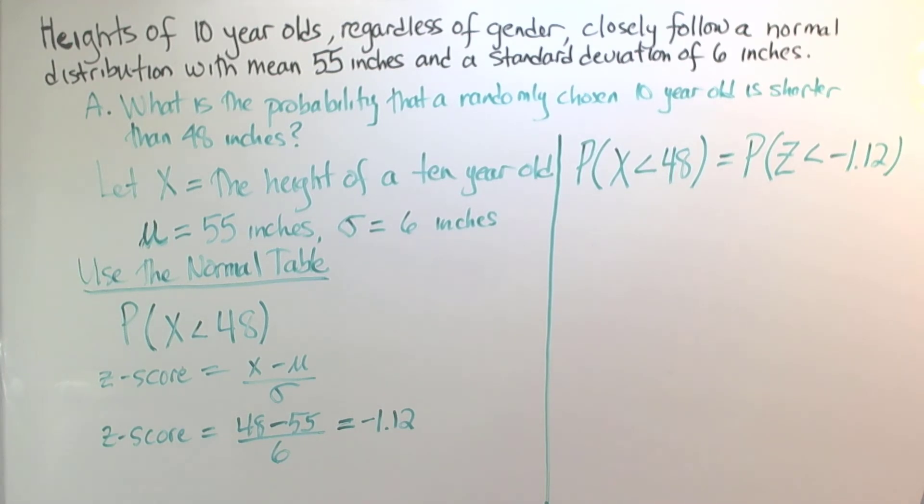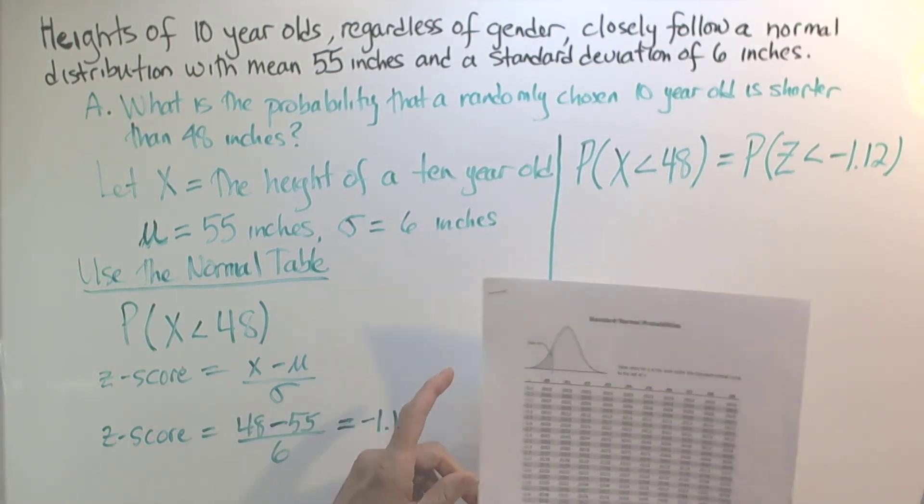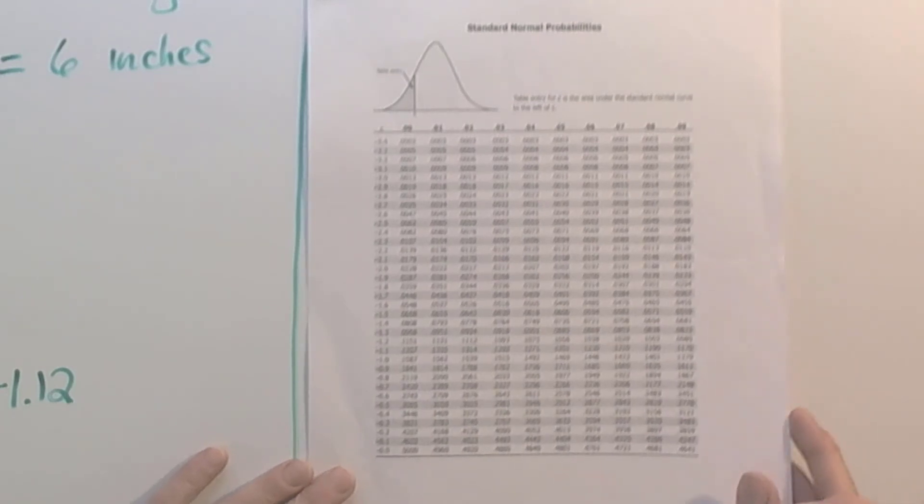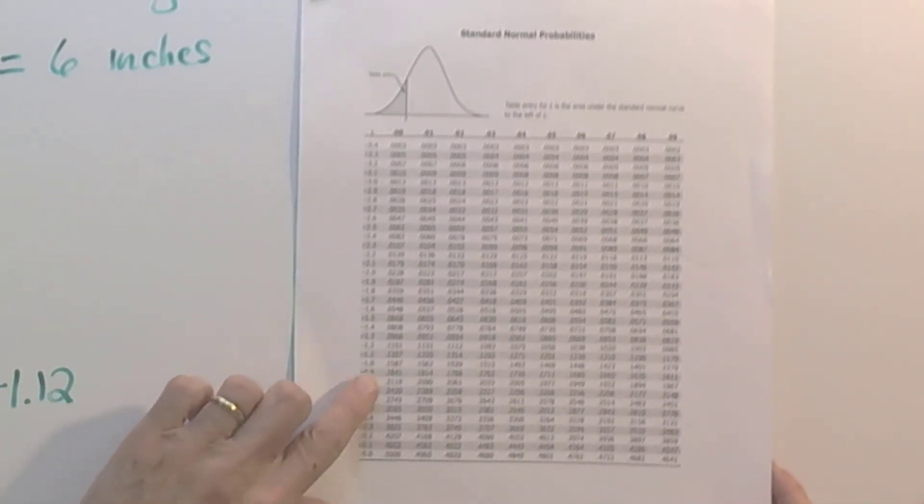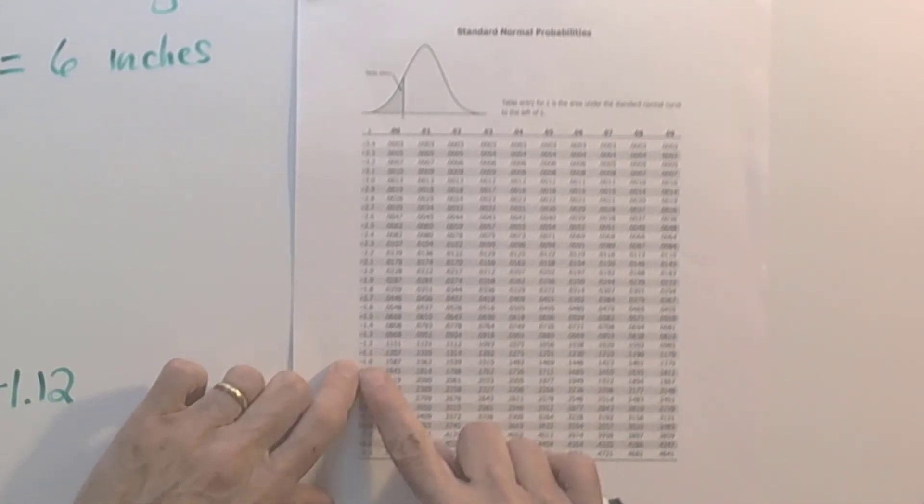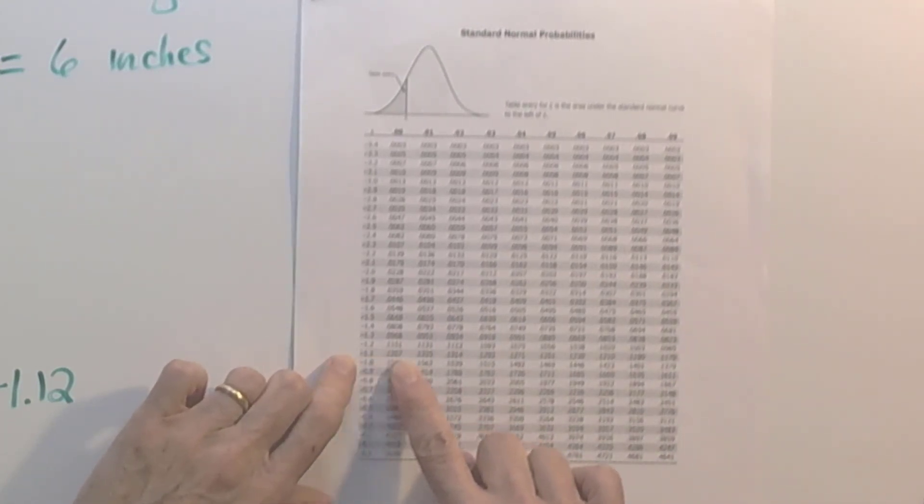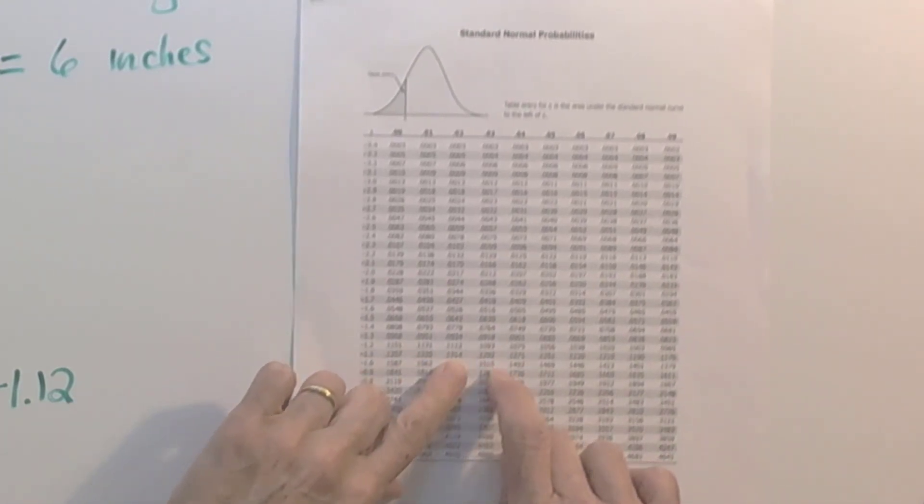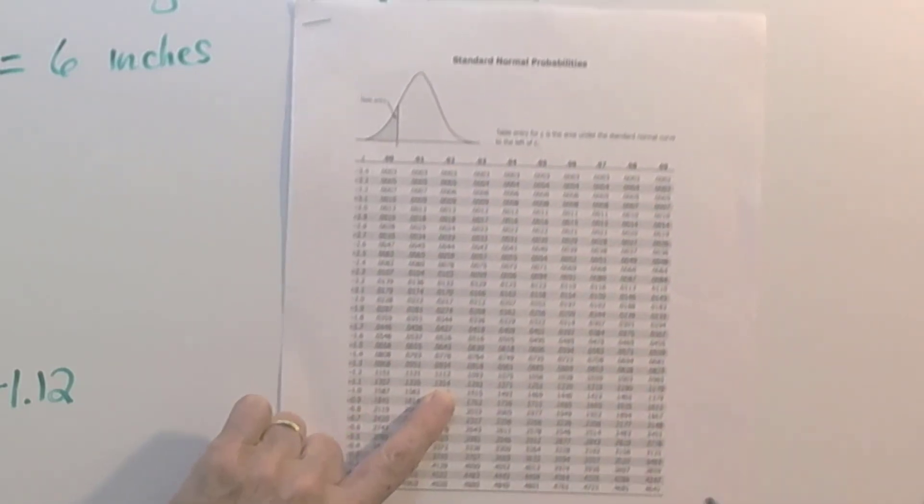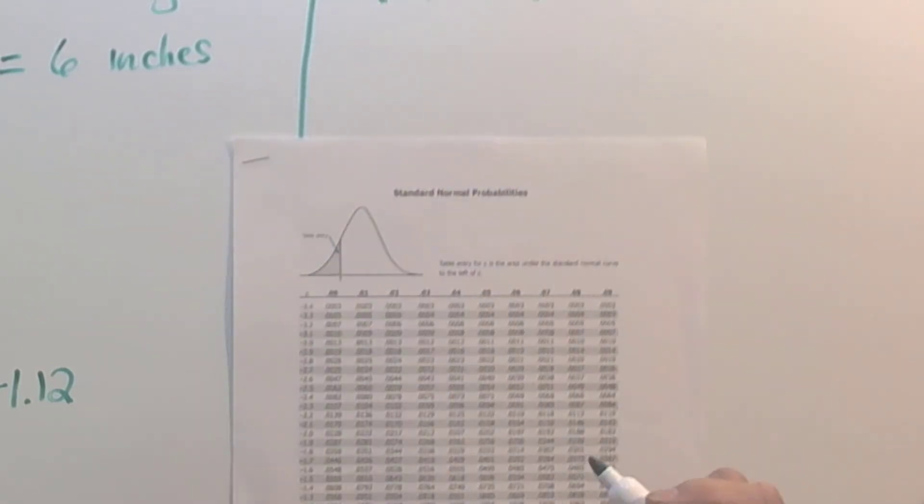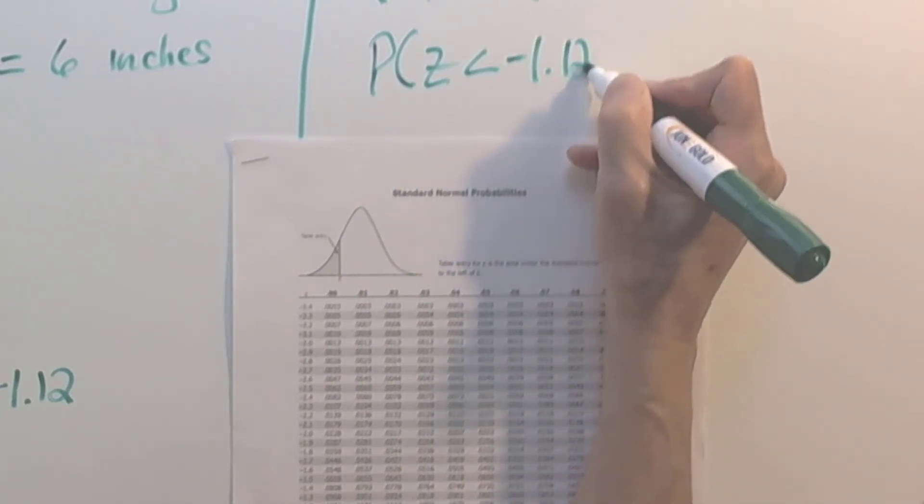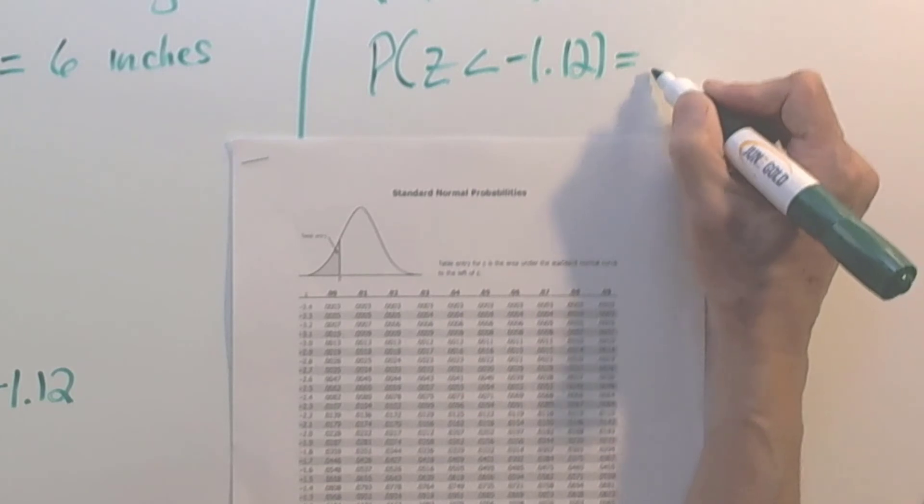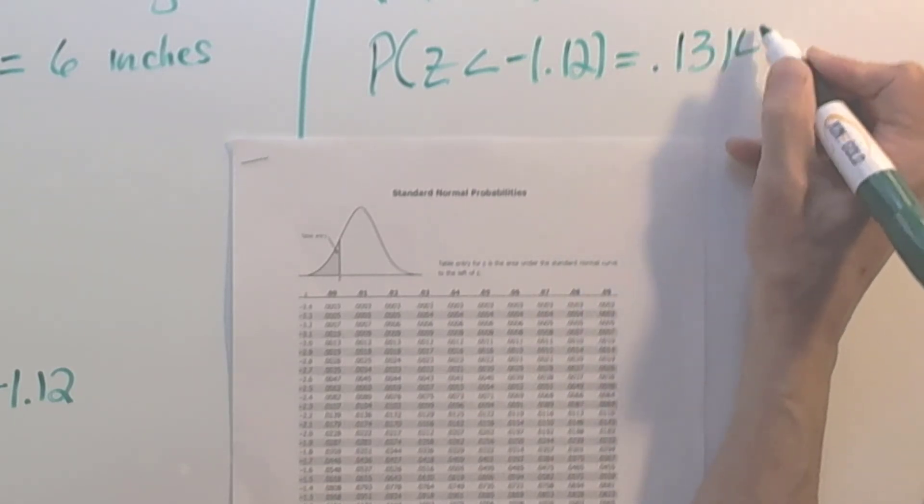Now let's get our normal table. And here's the normal table. We're looking for negative 1.12 on the table. So here's negative 1.1 and negative 1.12 is right here. So we can say that the probability that z is less than negative 1.12 is 0.1314.